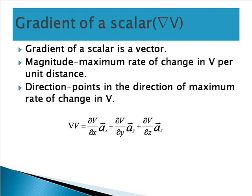First, we are going to see gradient of a scalar. It is denoted as del v. Gradient of a scalar is always a vector, meaning it has both magnitude and direction. This magnitude gives the maximum rate of change in v per unit distance, and the direction points in the direction of maximum rate of change in v. Gradient is denoted as del v, which is equal to (∂v/∂x) ax-vector plus (∂v/∂y) ay-vector.